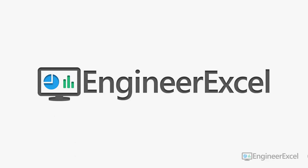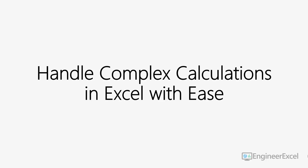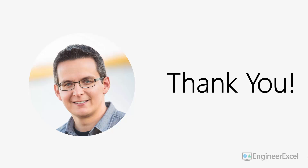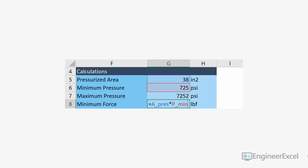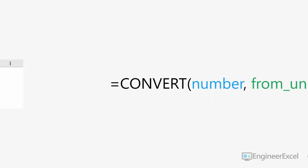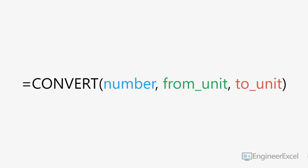Welcome to the second video in this three-part Excel training for engineers. In this video, we're going to look at how to handle complex calculations in Excel with ease. Thanks again for watching the first video and giving me your questions and feedback. In that video, I showed you how to use named ranges in calculations instead of cell references to make formulas less confusing and more readable. I also showed you how you can convert units right in Excel using the CONVERT function without having to look up conversion factors from other sources. If you didn't get a chance to watch that video, go back and check it out right now before you watch the rest of this one.